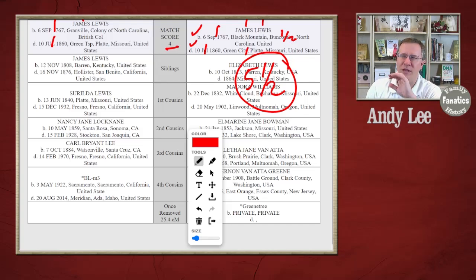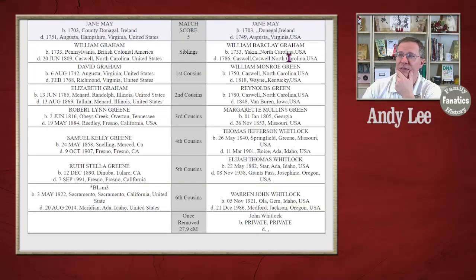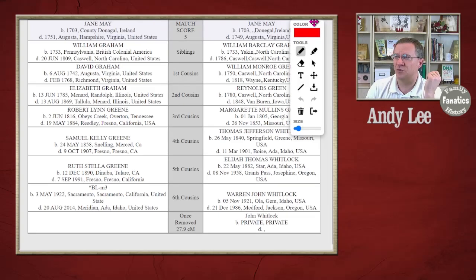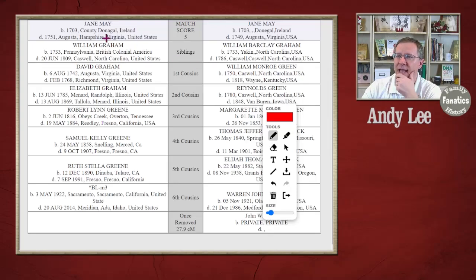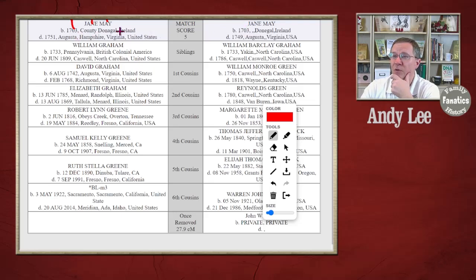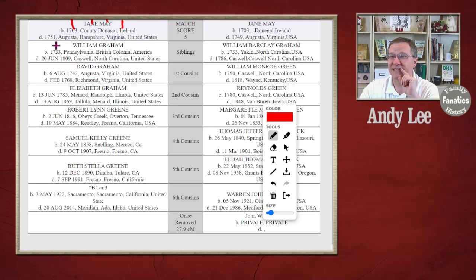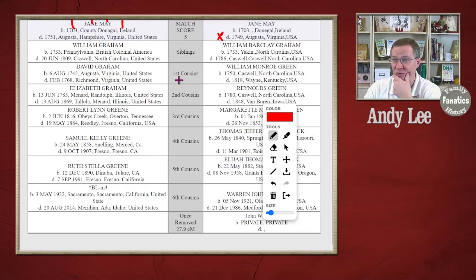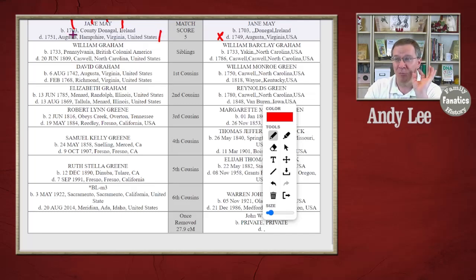Going forward, maybe they don't do halves at all — maybe this is all or nothing. We've got Jane May with a score of five. I'll give one for the first and last name. Birth date 1703 versus 1703 — one point. Birth place County Donegal Ireland — I'll say that's a one as well. Death date 1751 versus 1749 — that's different, so no score under the all-or-nothing approach. Death place Augusta Virginia USA versus Augusta Virginia — they have Hampshire and the county listed. I'll give that a one. Using this new all-or-nothing scoring method, I get a score of five, which matches what they have.